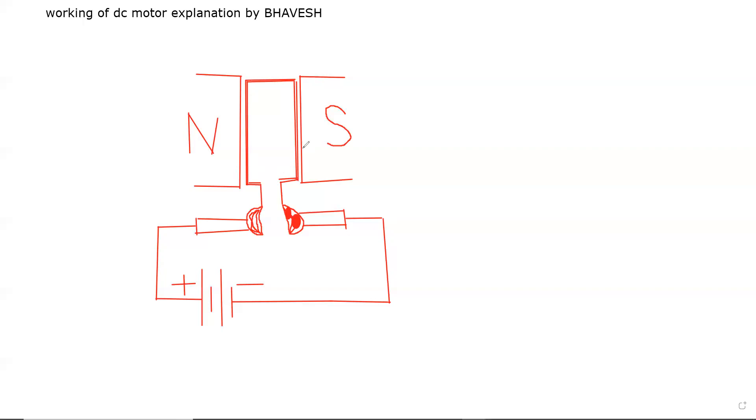This is a layer of wire. Then we will connect with a split ring. We will connect with two split rings. We call it a commutator. This commutator helps change the current direction.